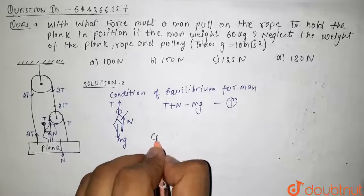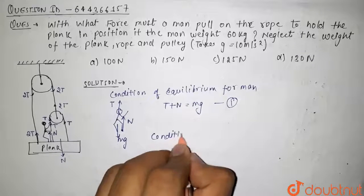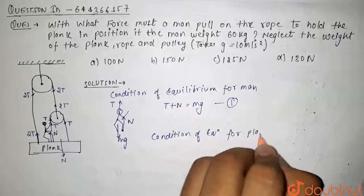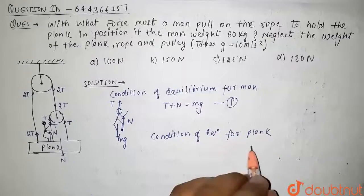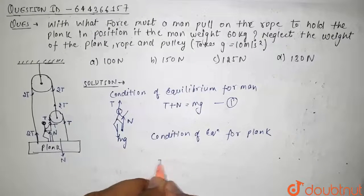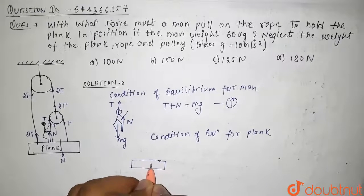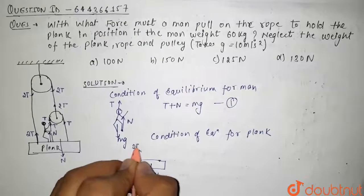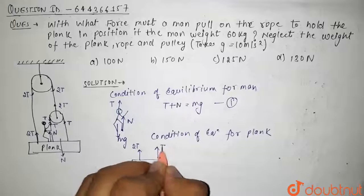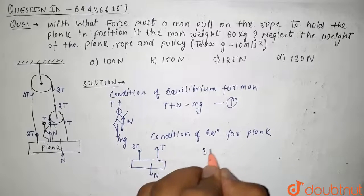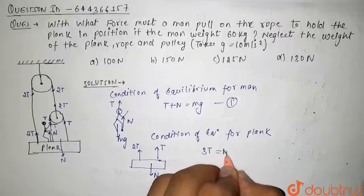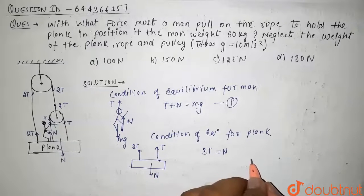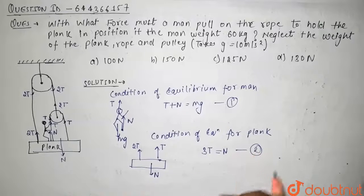Now the condition of equilibrium for the plank. Since the plank is weightless, drawing its free body diagram: normal N acts downward, 2T acts upward, and T acts upward. So balancing forces: 3T = N. This is our second equation.